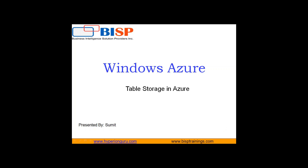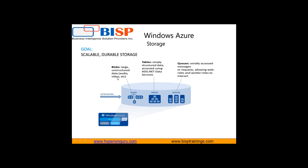Let's talk about the various types of storage available in Windows Azure. We have blob, tables, and queues. Blobs are basically used to store large or unstructured data like audios, videos, images, pictures, etc., that can be uploaded online and shared via a web application. Tables store simply structured data which can be accessed using ADO.NET services. In queues, we can store serially accessed messages or requests, allowing web roles and worker roles to interact with those messages stored in queues.